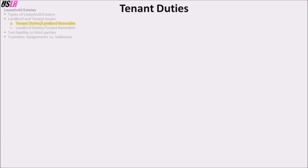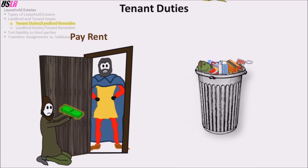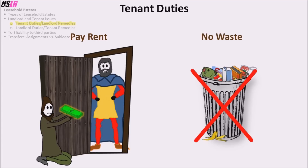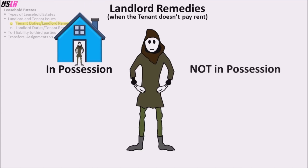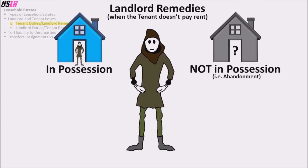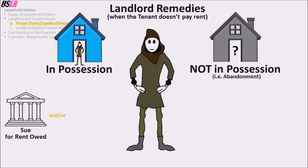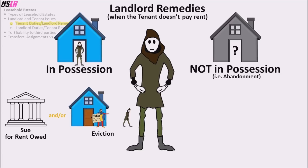Tenant duties fall under two issues: rent and waste. The tenant has the duty to pay rent. The landlord's remedies depend on whether the tenant has left the property before the lease has ended. If the tenant does not pay rent and is in possession, the landlord can sue for rent owed while allowing the tenancy to continue, and/or the landlord can end the tenancy by evicting the tenant. Once the tenant is evicted the leasehold becomes a tenancy at sufferance, so the landlord is entitled to rent until the tenant leaves.